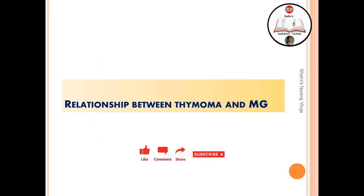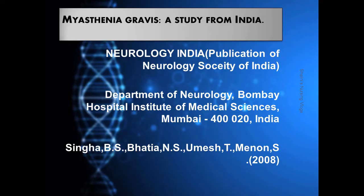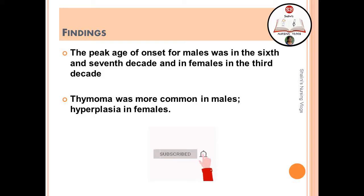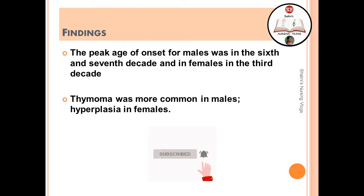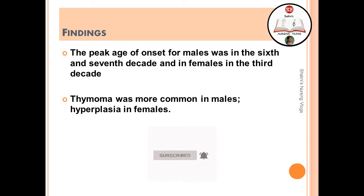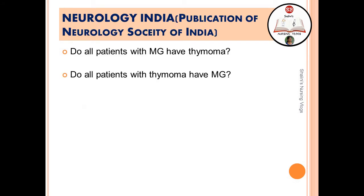Regarding the relationship between thymoma and myasthenia gravis: a study from India conducted by the Department of Neurology, Bombay Hospital Institute of Medical Sciences — a retrospective study among individuals with MG — found that the peak age of onset for males was in the sixth and seventh decade, and for females in the third decade. Thymoma was more common in males and thymic hyperplasia in females.